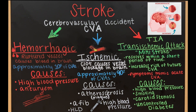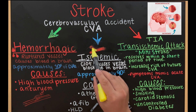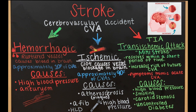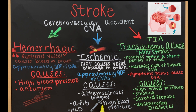Ischemic strokes involve a clot that blocks a vessel in the brain. This is where most strokes happen — approximately 90% of all CVAs. As shown in the diagram, a clot occludes a vessel branch, causing a lack of blood flow to the brain. Primary causes include atherosclerosis — meaning plaque buildup — afib, hyperlipidemia, and high blood pressure.